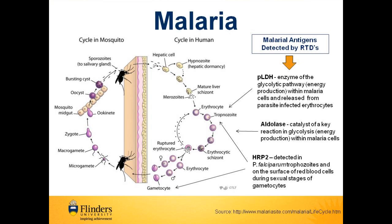Here you can see an illustration of the life cycle of the malaria parasite and where the different types of antigens can be detected during this cycle. The person is bitten by the mosquito, which injects the malaria parasites into the bloodstream. These then travel to the liver and invade liver cells. Over a few days, depending on the species of malaria, the parasites grow, divide and produce thousands of merozoites. In some malaria species, these can remain dormant for extended periods in the liver, causing relapses weeks or months later.